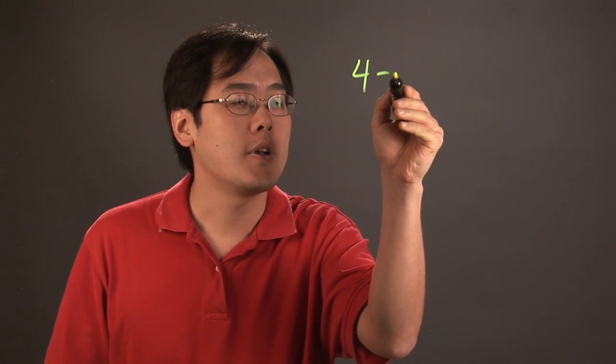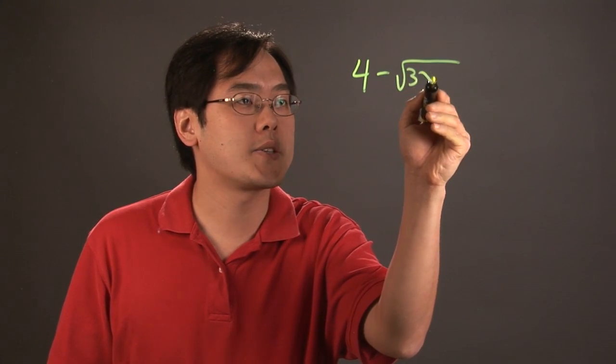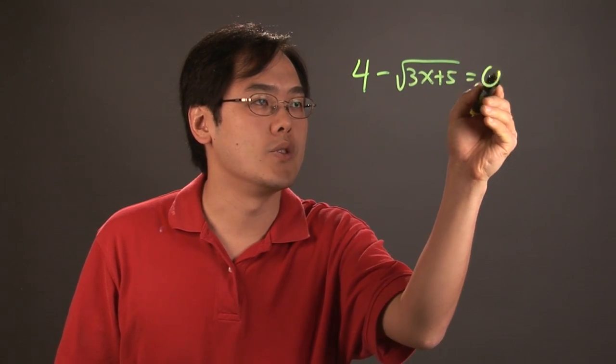So let's do a quick example, and you'll see how this works. Now, suppose you have 4 minus the square root of 3x plus 5 equal to 0.